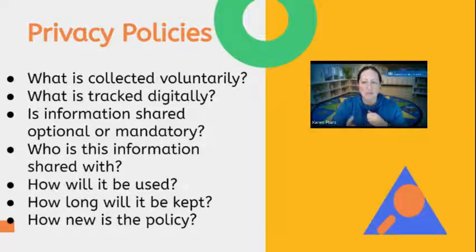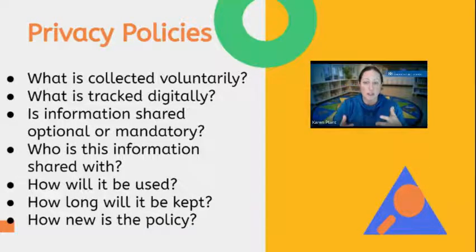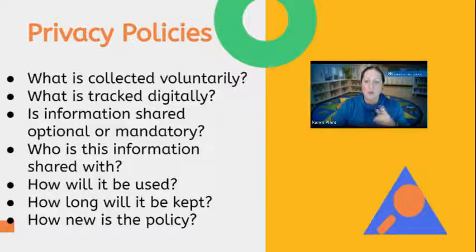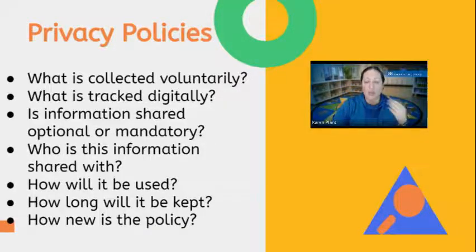We need to look at the type of information the website collects. That includes what we give voluntarily — like what we actually type in or purposefully provide — versus what is tracked electronically, like our location or cookies. We also have to figure out what information is optional versus what we have to provide in order to use the service.